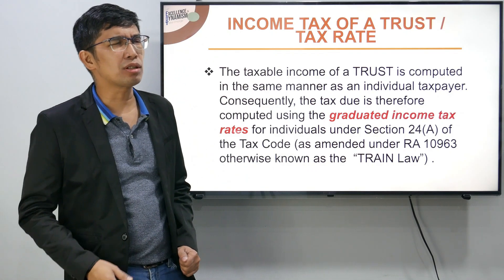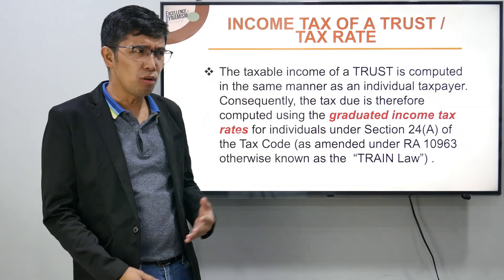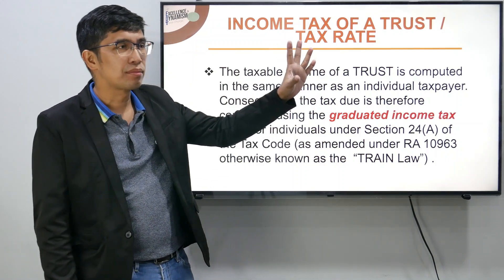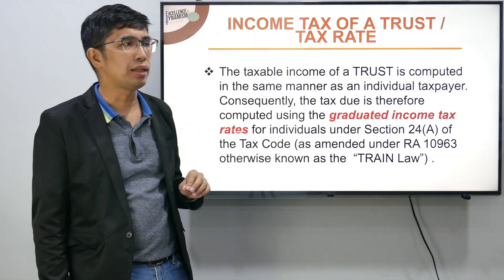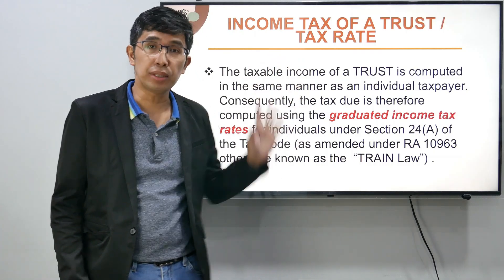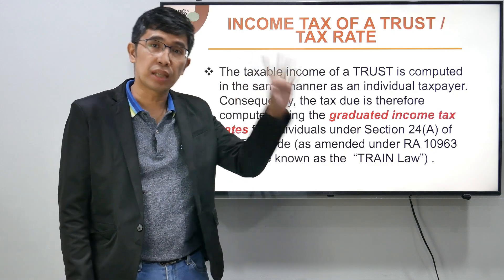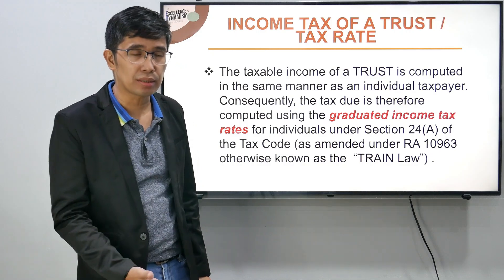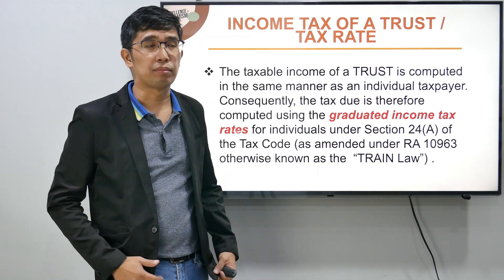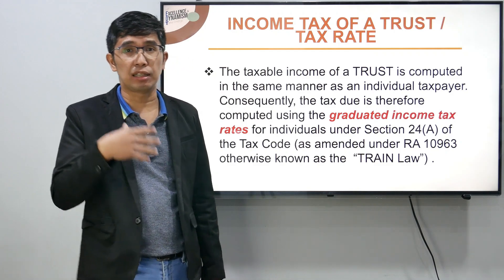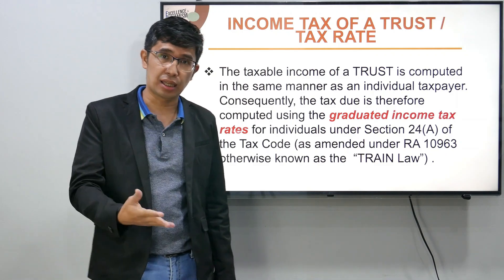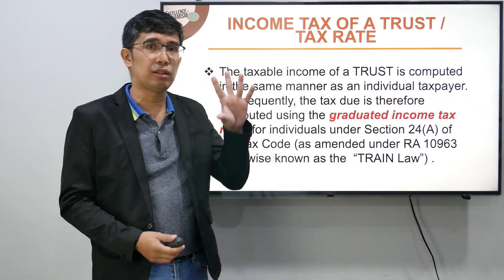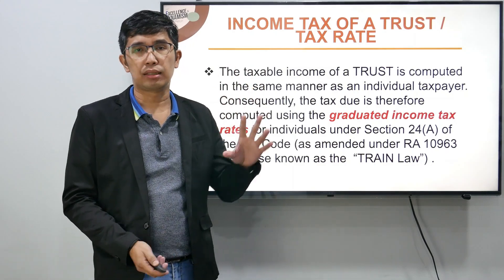How do we arrive at taxable income? Kung kagaya ng individual taxpayer: we start from sales — kung yan ay goods — or revenues kung services. Then we deduct the applicable cost of sales or cost of services and the operating expenses to arrive at taxable net income. Yung formula na yan generic naman — hindi lang sa individuals, hindi lang sa estates, hindi lang sa trusts, kundi pati sa corporations at partnerships. Generally, ganun ka din mag-arrive at taxable income.